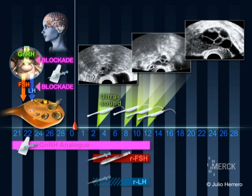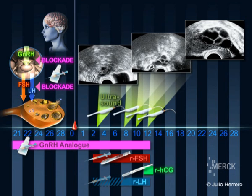When at least 3 follicles have grown to the size of at least 18mm, final follicular maturation is triggered with the hormone HCG. The ova that are within the follicles will begin to mature.